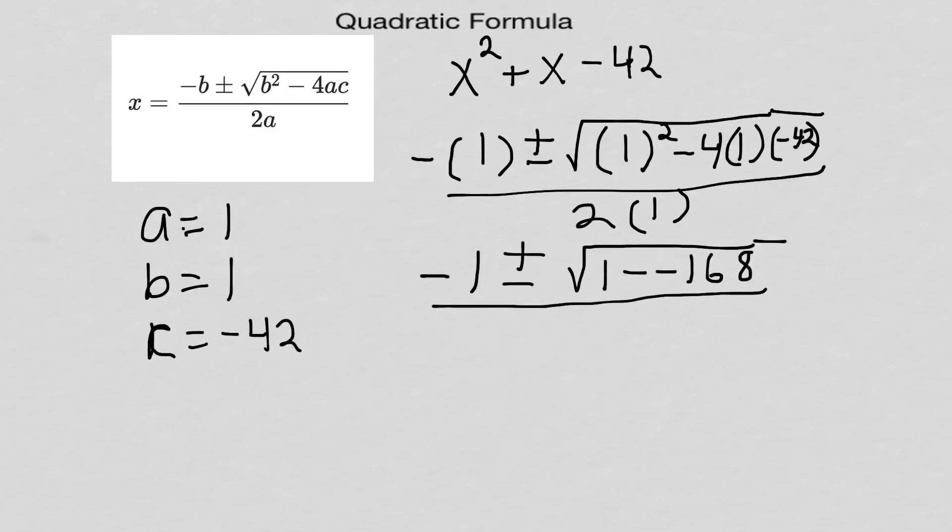Let's bring this down. Got minus one plus or minus - one plus 168 is going to be 169. That is a perfect square.